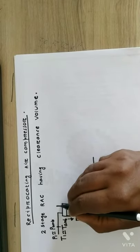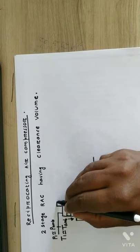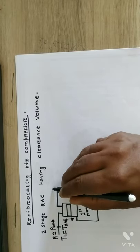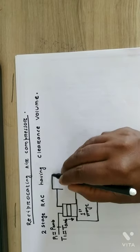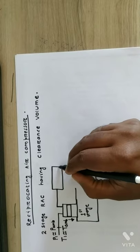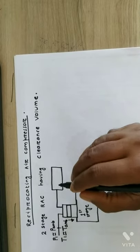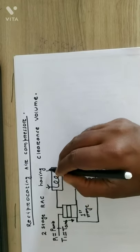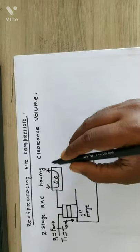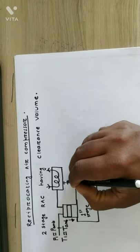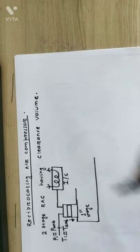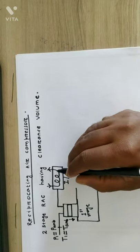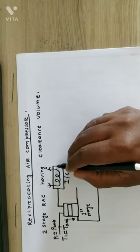The high pressure air will be delivered into the second stage compressor. Before being delivered to the second stage compressor, there is an intercooler arrangement. There will be cooling water circulation — cooling water in and cooling water out. This is called the intercooler, and it is necessarily a constant pressure heat exchanger.